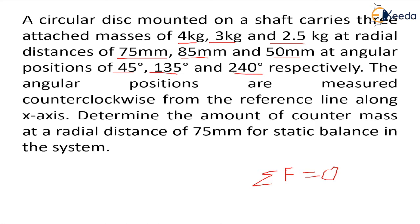The angular positions are measured counterclockwise from the reference line along the x-axis. This means if we take the x-axis as the reference line and whatever mass is there, we measure it counterclockwise. This is how we calculate the angles whenever any reference is given. If you try to measure this angle in this direction, this will be wrong.